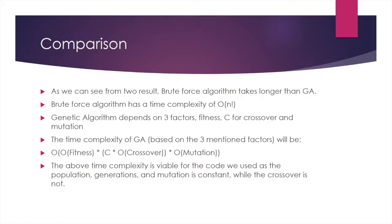For theoretical calculation, we found that the brute force algorithm has a time complexity of O of N factorial. However, for genetic algorithm, the time complexity depends on three factors: fitness, crossover, and mutation. Therefore, the equation is O of fitness multiplied C times O of crossover multiplied O of mutation.